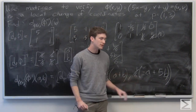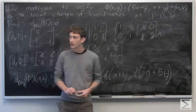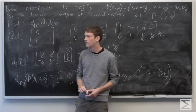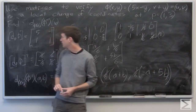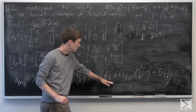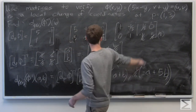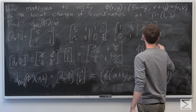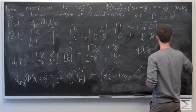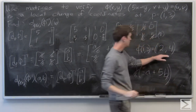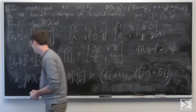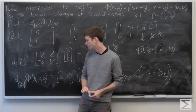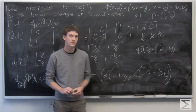So the total derivative of phi inverse at phi of p with respect to (a, b) is the vector (1/6)(a + b) for the first component and (1/6)(negative a + 5b) for the second. We've verified that phi is a local smooth change of coordinates. Since p = (1, 3), we calculate phi(1, 3) = (2, 4), so the total derivative of phi inverse at the point (2, 4) with respect to (a, b) is our final solution.